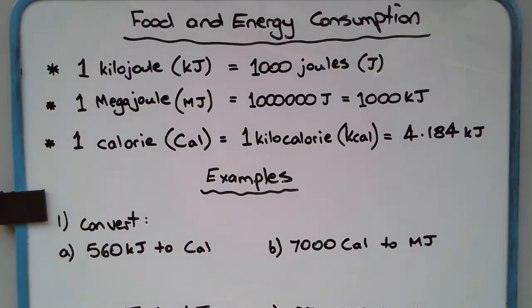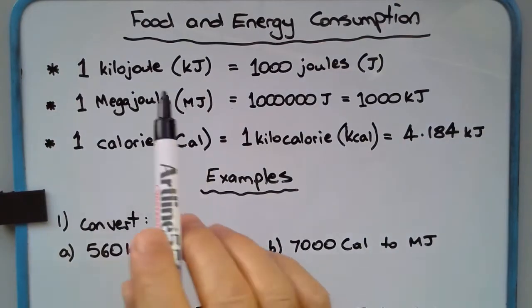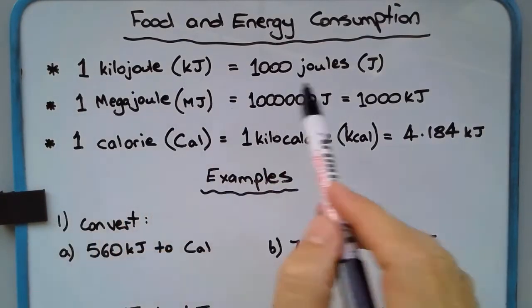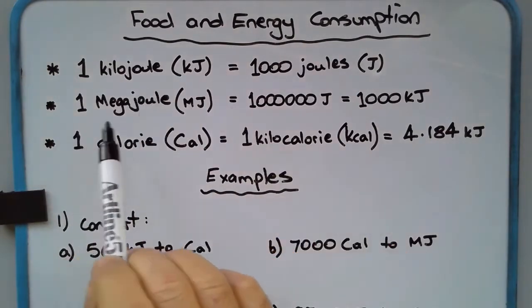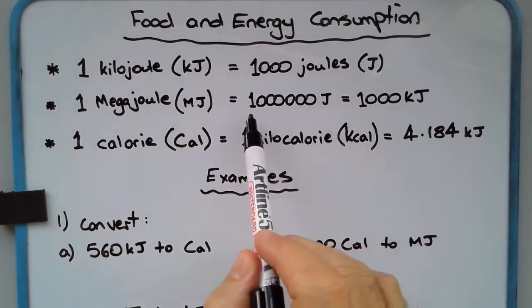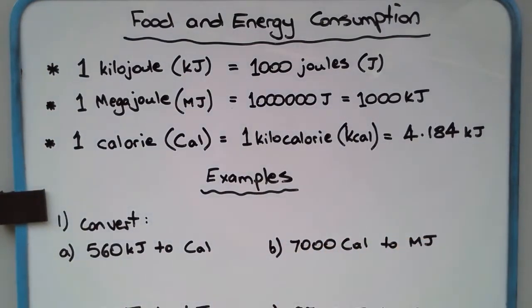Let's have a quick look at food and energy consumption. Energy in food is generally measured in kilojoules or calories. One kilojoule is a thousand joules. One megajoule is a million joules, which equals a thousand kilojoules.